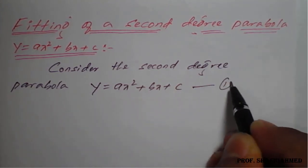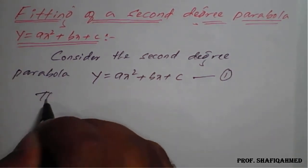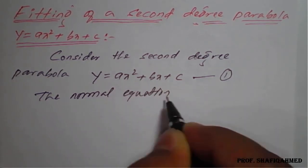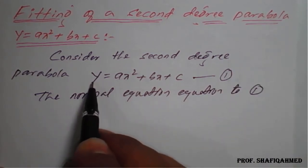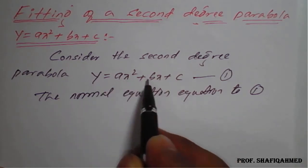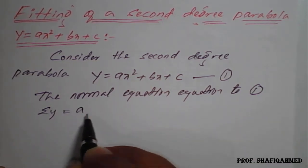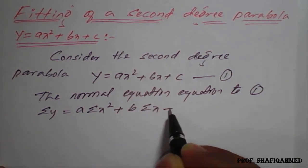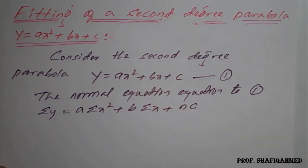We will give this equation number 1. For this we have to prepare a normal equation. For the first normal equation, we need to multiply the summation symbol on both sides of equation number 1. It will become: summation y = a·(summation x²) + b·(summation x) + nc, since c is a pure constant, we multiply n.